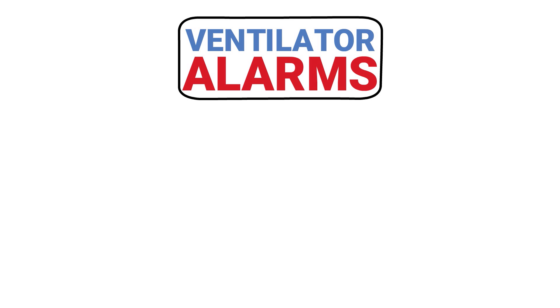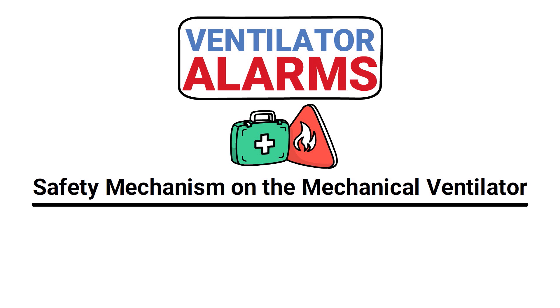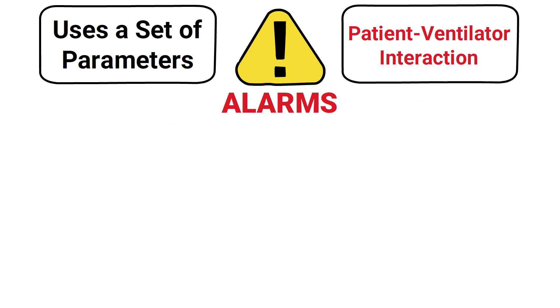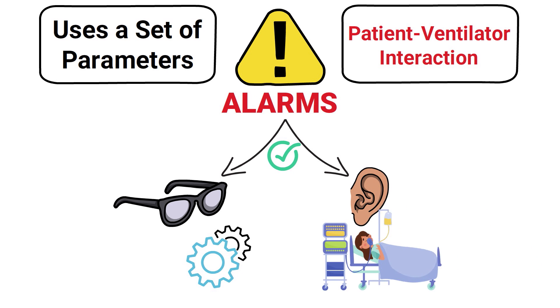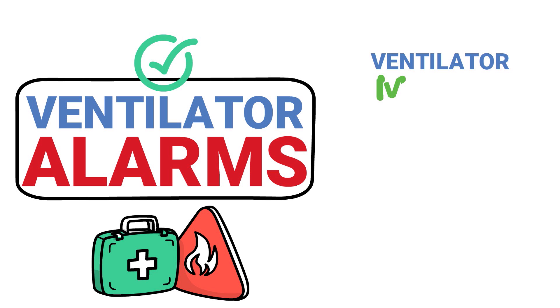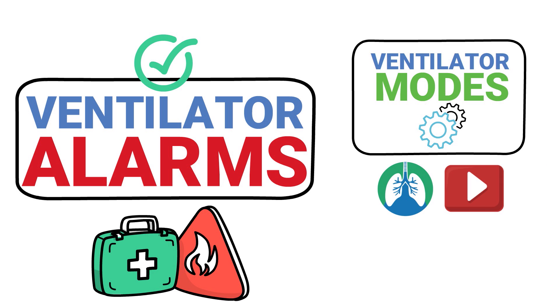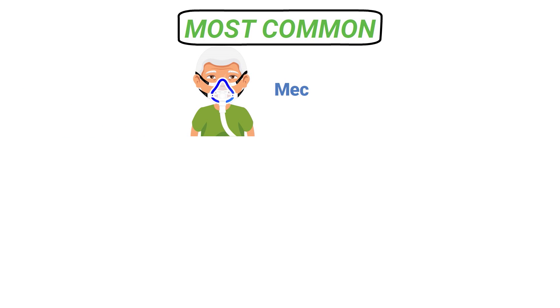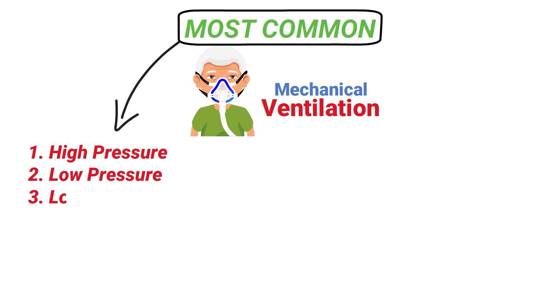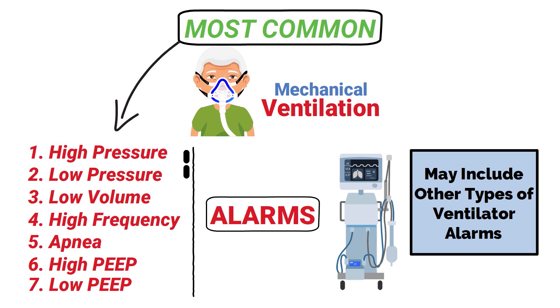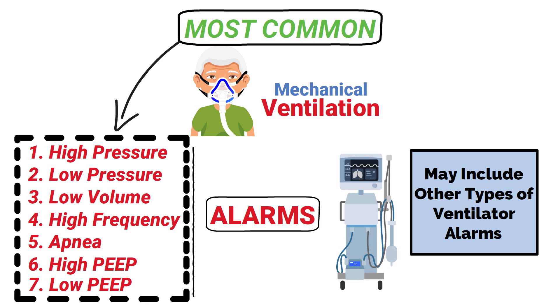A ventilator alarm is a safety mechanism on the mechanical ventilator that uses a set of parameters to provide alerts whenever there is a potential problem related to the patient-ventilator interaction. The alarms can be visual, audible, or both, depending on the ventilator setting and the patient's condition. Some of the most common alarms include: high pressure, low pressure, low volume, high frequency, apnea, high PEEP, and low PEEP.